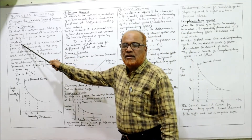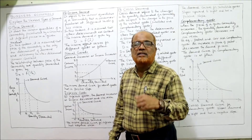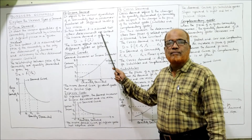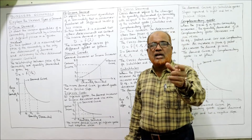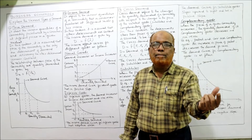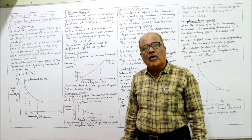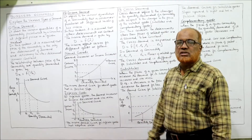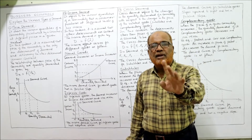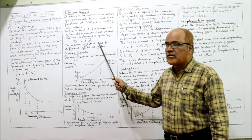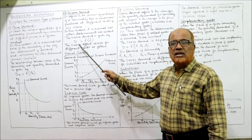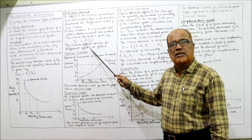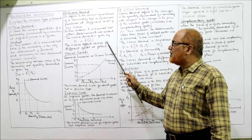Income demand shows the relationship between quantity demanded and income. As income changes, the quantity demanded will also change. Here, other determinants are assumed to be constant. The demand depends only on income. The income demand function is: D = f(I), meaning demand for a commodity depends on the income of the consumer.